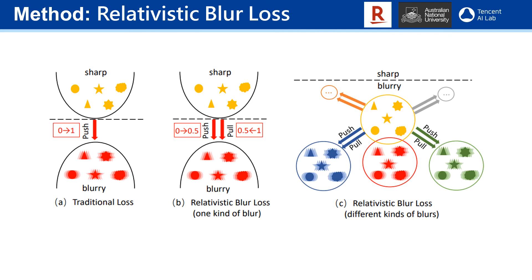This is an illustration of the realistic blurry loss. In this case, real and synthesized images are labeled as 1 and 0. Figure A is the previously used loss function, and Figure B is the proposed realistic blurry loss. Instead of optimizing the absolute difference between the synthesized and real images, we optimize the relative differences between them. As a result, it can not only increase the probability that the generated images look real, but also simultaneously decrease the probability that the real images are classified as real. Different blurring kernels are used to model different types of real-world blurries, as shown in C.